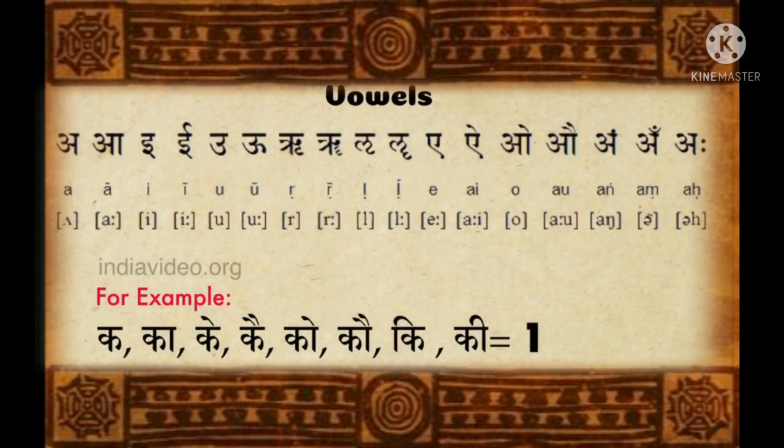The vowels, or Swarakshara, are not assigned any numerical value. For example, K, Ka, Ki, Kai, Kau — all of these represent the number 1.